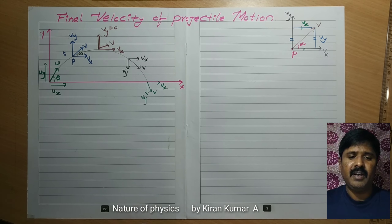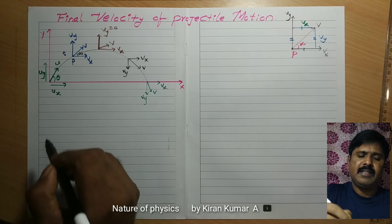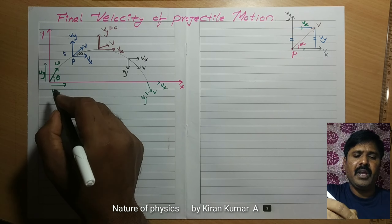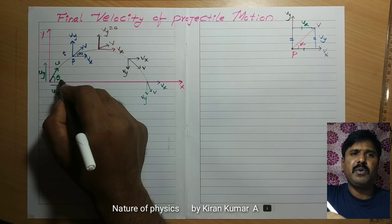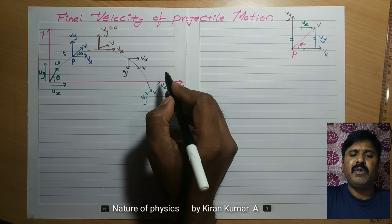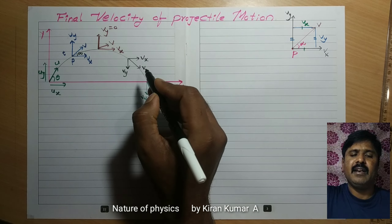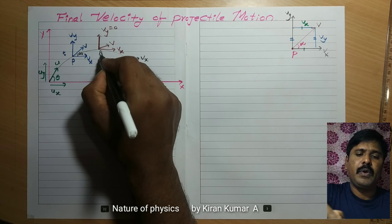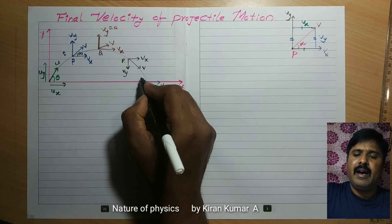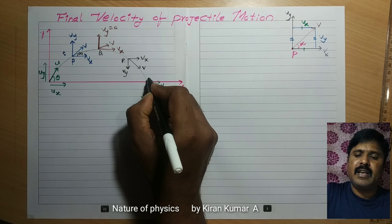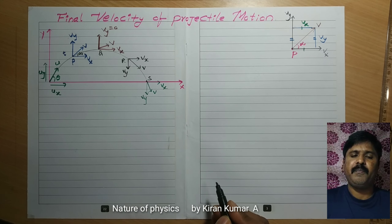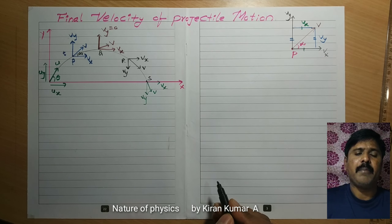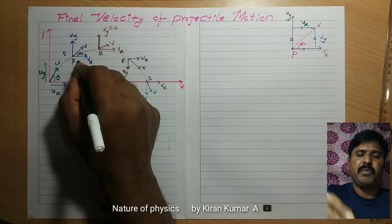Okay, students. For this, I am considering here the initial velocity resolved into two components, and final velocity at different positions. P, Q, R, and this is taken as S position. So for derivation point of view, I am considering P position.